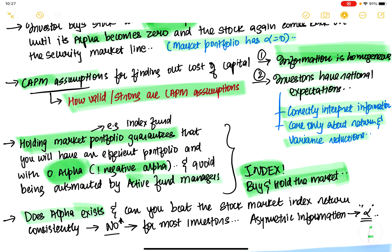Does alpha actually exist? Is there a way to beat the index? If there is alpha, you can beat the index, and that means the market is not efficient. The short answer is no — alpha doesn't exist for most investors, because data and research suggest that people don't have much asymmetric information. However, there's an asterisk: there are some people who can generate alpha, and that's what we're going to look at.